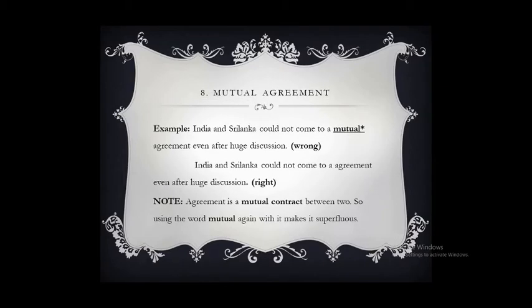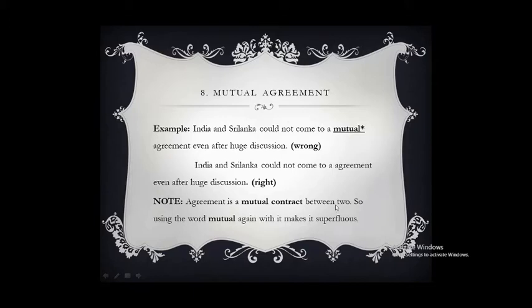'Mutual agreement' — agreement itself means two parties accept it, so using 'mutual' again with it is wrong. Also, we should not use 'mutual friend' or 'mutual interest' — we should use 'common friend' or 'common interest.' The correct form is: 'India and Sri Lanka could not come to an agreement even after huge discussion.' Agreement is already a mutual contract between two, so using 'mutual' again makes it superfluous.